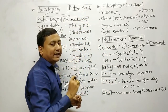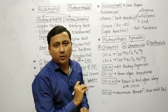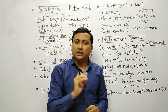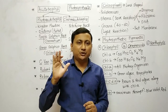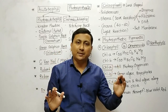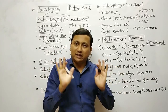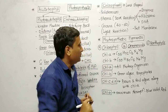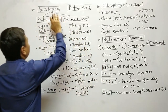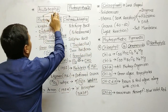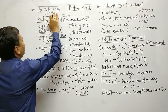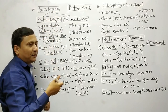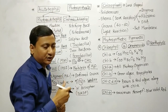You have a chemical reaction provided where you use the reactants and produce products. The next heading from the textbook is autotrophic mode of nutrition.